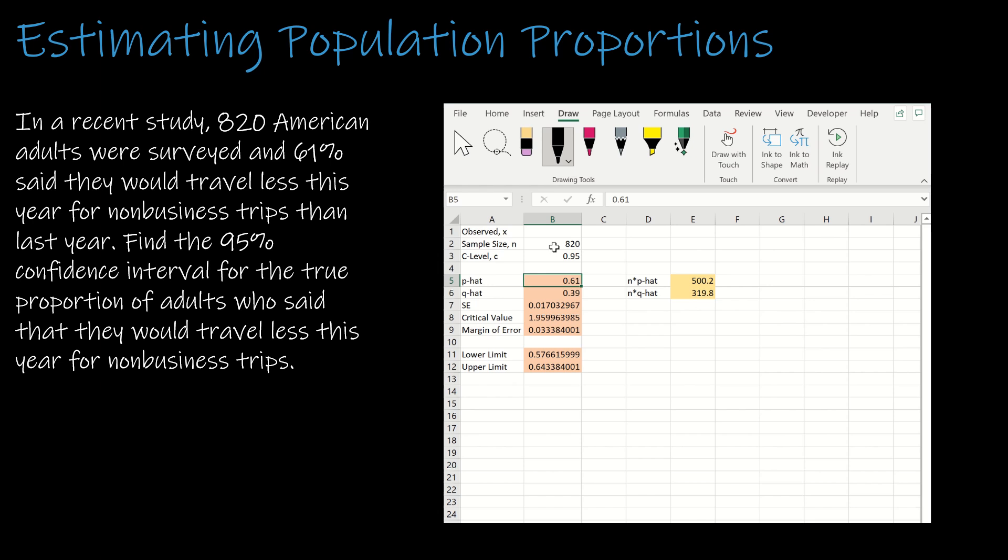Notice everything else populated. I got Q hat which is 1 minus P hat, I still have the standard error, critical value, margin of error. I can check my conditions over here - they're both at least 10. And then find that the proportion of adults who said they would travel less this year for non-business trips is between 57.7 percent and 64.3 percent.